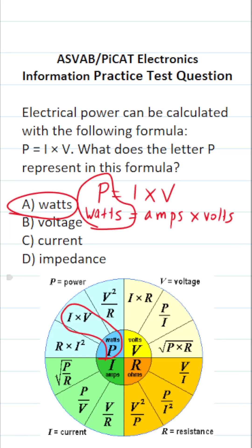You don't necessarily have to memorize all these formulas for the electronics information subtest of the ASVAB. That said, I would definitely know that V stands for volts, R stands for ohms, I stands for amps, and P stands for watts.